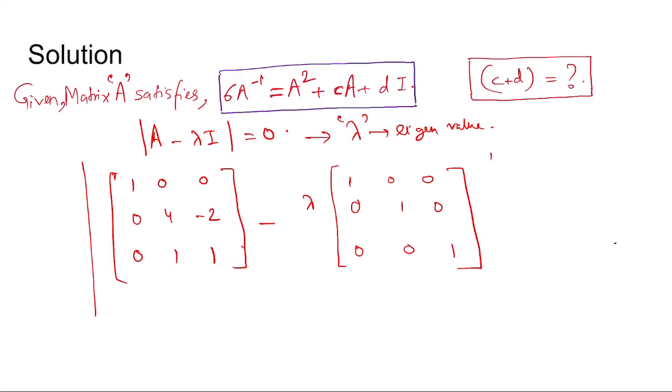And then we take the determinant of this, equate it with 0 to find lambda. Coming 1 minus lambda, 0, 0, 0, 4 minus lambda, minus 2, and then 0, 1, and 1 minus lambda. So breaking it down we have 1 minus lambda in 4 minus lambda into 1 minus lambda and minus minus 2 equal to 0.